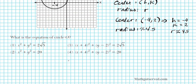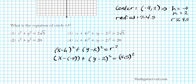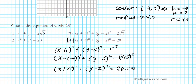Simplifying, we get x plus 4 squared plus y minus 2 squared equals 20.25. The closest answer among the options is option number 4. That is the equation of this circle in standard form.